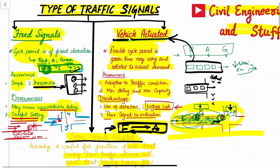So these are the three types of traffic signals: fixed, vehicle-actuated, and semi-vehicle-actuated.